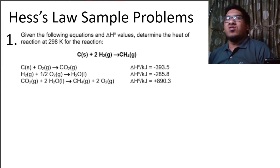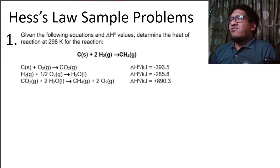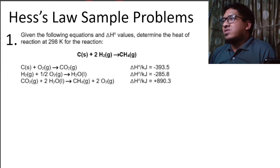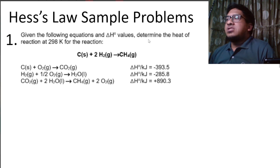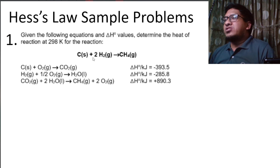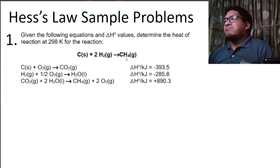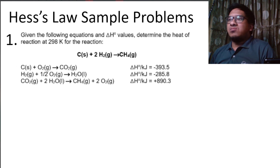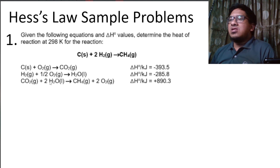Let us solve some Hess's Law problems. For the first problem, given the following equations and standard enthalpy change values, determine the heat of reaction at 298 Kelvin for: carbon reacts with two moles of hydrogen gas to yield methane gas. We have the combination reactions for carbon dioxide and water, and the reaction of carbon dioxide with water yielding methane and oxygen.